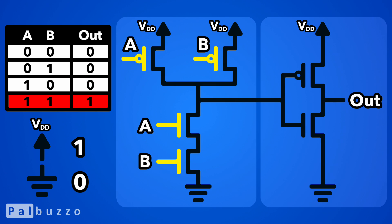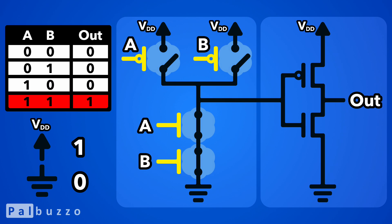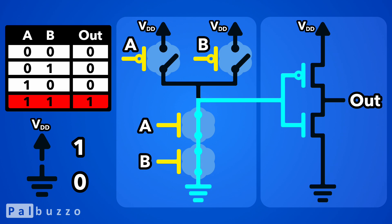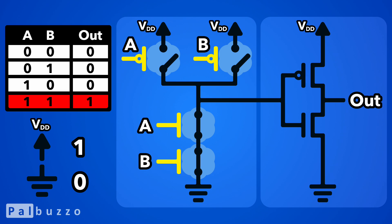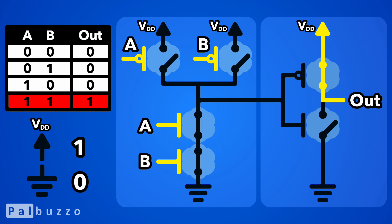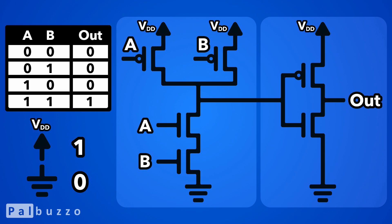But when both inputs are 1, it will cause the NMOS transistors in the first stage to connect the intermediate output to ground. This will then cause the PMOS transistor in the second stage to connect the final output to VDD, producing a result of 1.